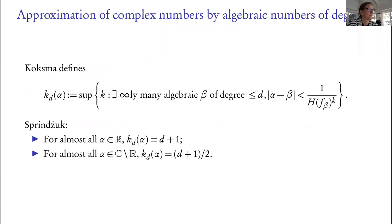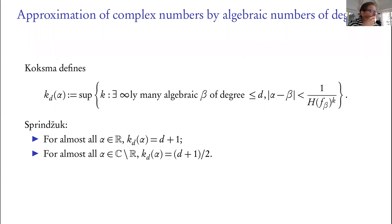There's an audience question: does the d+1 vs. (d+1)/2 distinction have anything to do with re-interpreting the height h when you have two embeddings into the complexes — totally real versus having complex embeddings, where there's a square appearing in the norm? Could one try to interpret these as the same thing, with h being what changes? The speaker says: I might have an idea what you mean, but I haven't thought about it that way — let's discuss later.